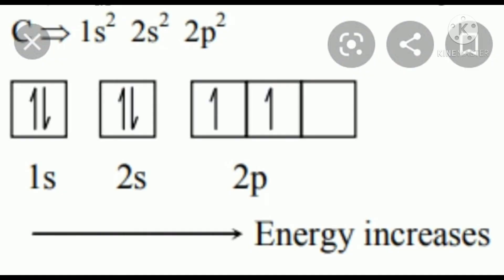Second example: carbon. In accordance with Hund's rule, the electronic configuration of carbon — atomic number 6 — is 1s² 2s² 2px¹ 2py¹. The sixth electron has no tendency to pair up with the fifth one in the 2px orbital; it singly occupies the 2py orbital, so that the number of unpaired electrons with parallel spin in the 2p level is maximum.